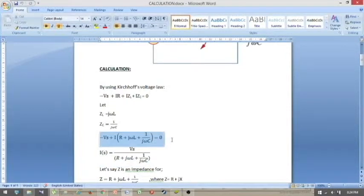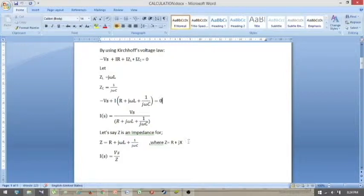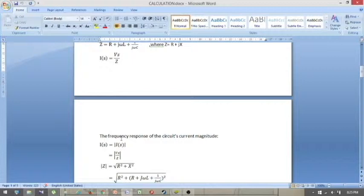This is the equation we can get substituting ZL into the above equation. Let's say Z is an impedance for R plus J omega L plus 1 over J omega C where Z equals to R plus JX. So, we can conclude that IS equals to VS over Z.